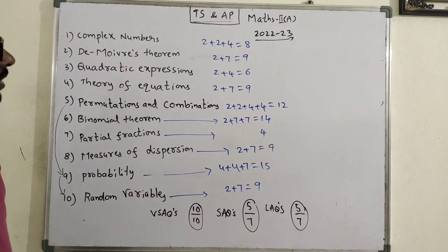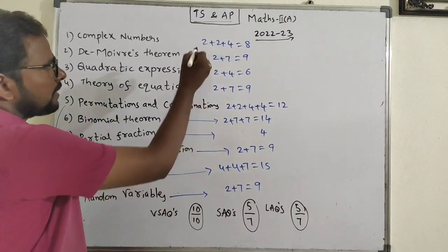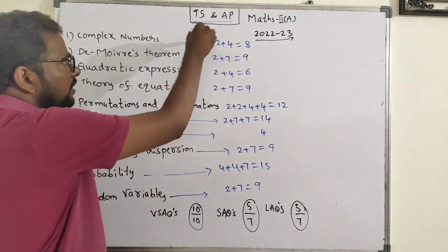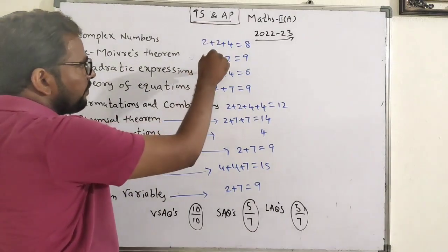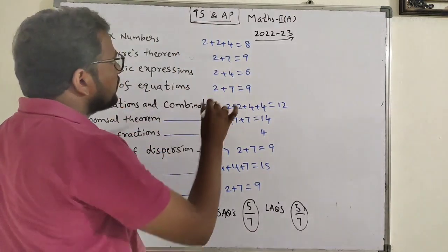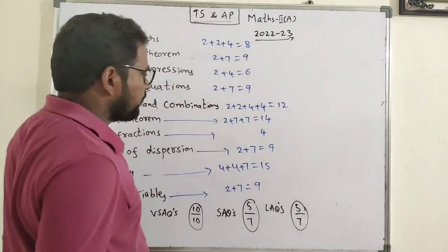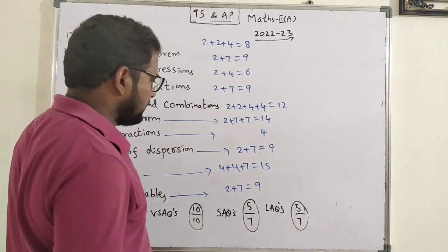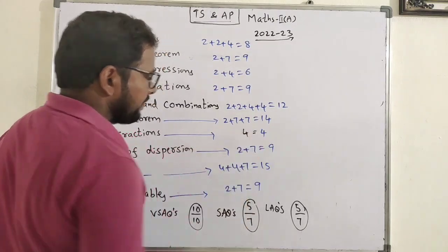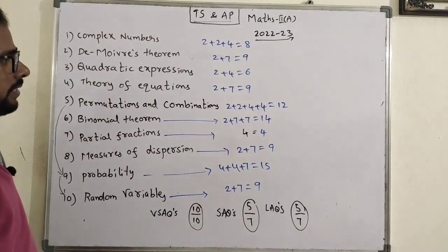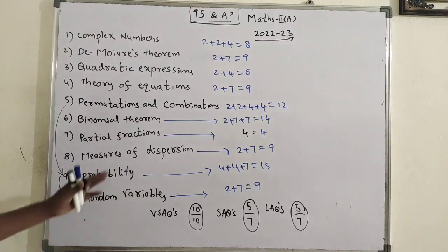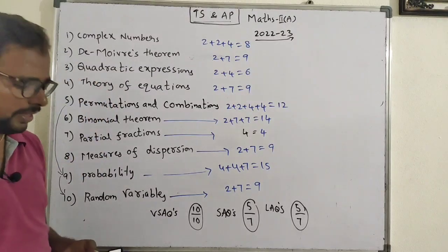Total marks: VSAQs — 10 questions × 2 marks = 20 marks. SAQs — 5 × 4 marks. LAQs — 5 × 7 marks. This is the new weightage and exam pattern.